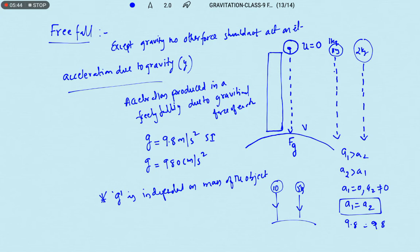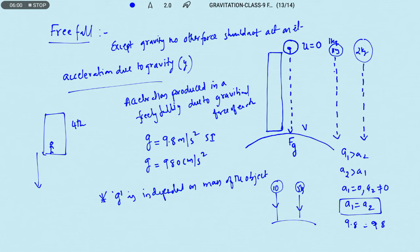Is there any case where we feel we are under freefall? Yes. When you are moving in a lift — suppose you are on the fourth floor and the lift starts moving downward to reach the ground — at the time of starting of the lift in the vertically downward direction, only the gravitational force is acting and no other force. So the person in the lift feels under freefall. In the same way, in artificial satellites, the person will feel they are under freefall only.